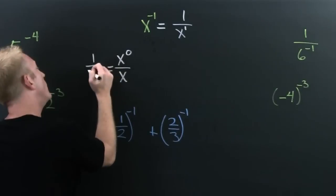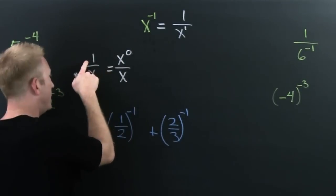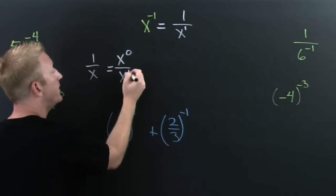Why? Because this guy right there is 1 over x. Because x to the 0 is 1. And then this is x to the 1.